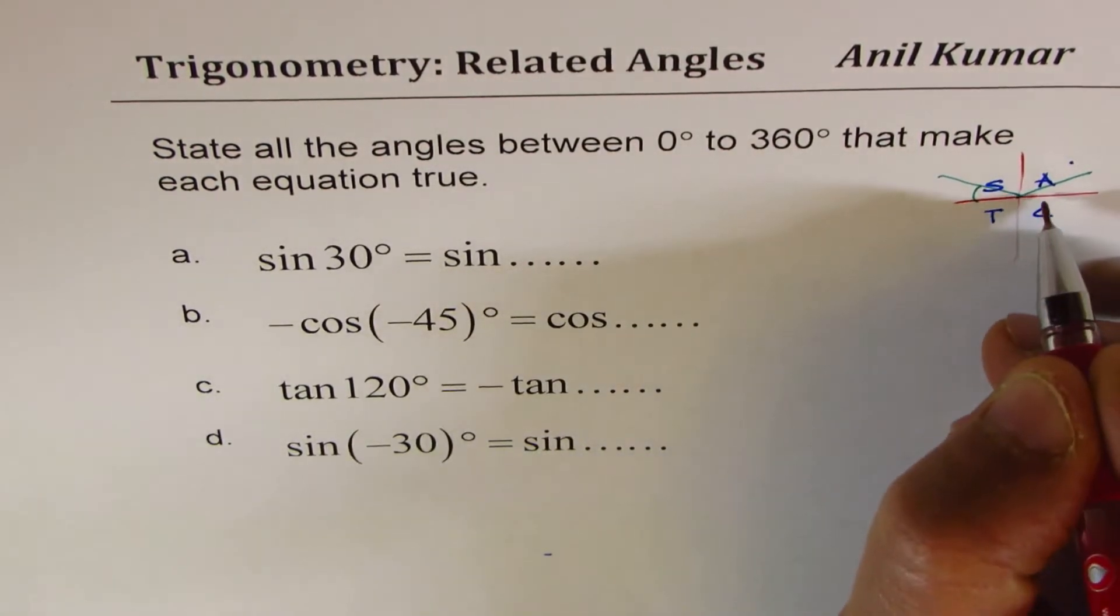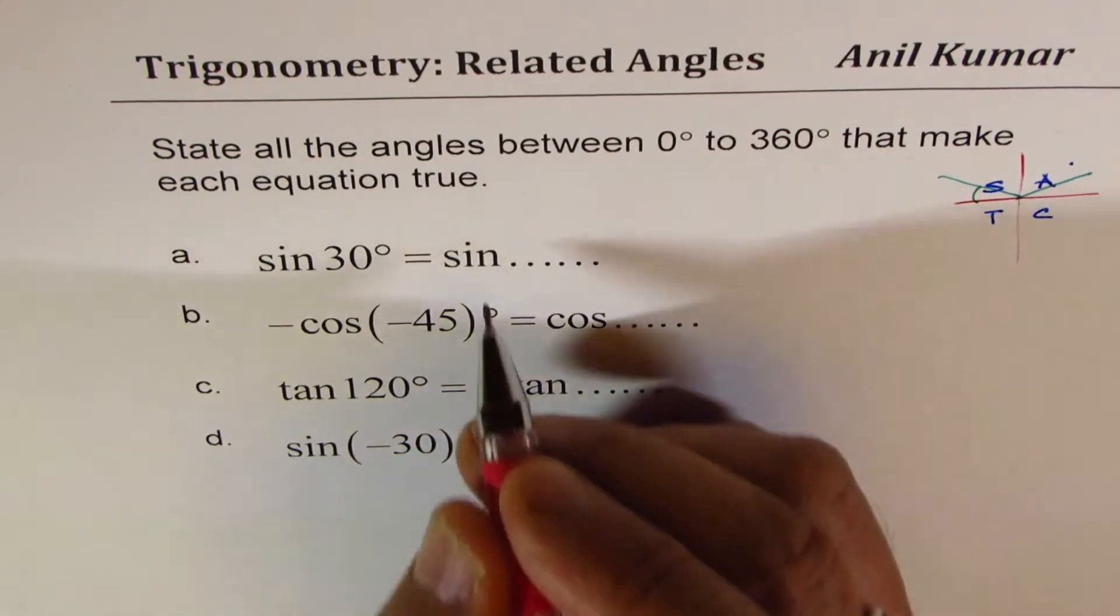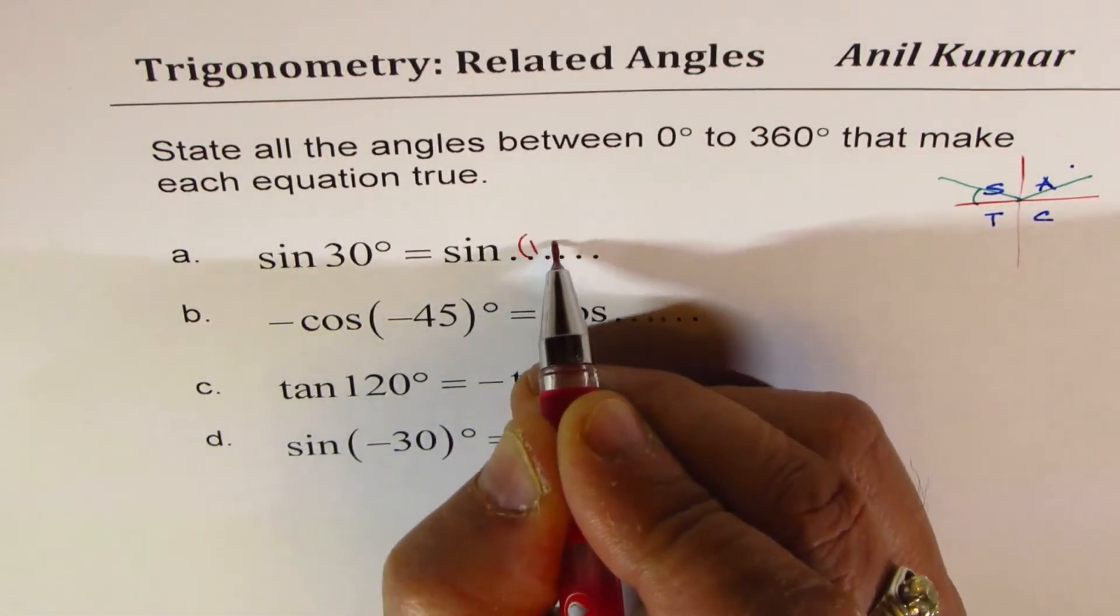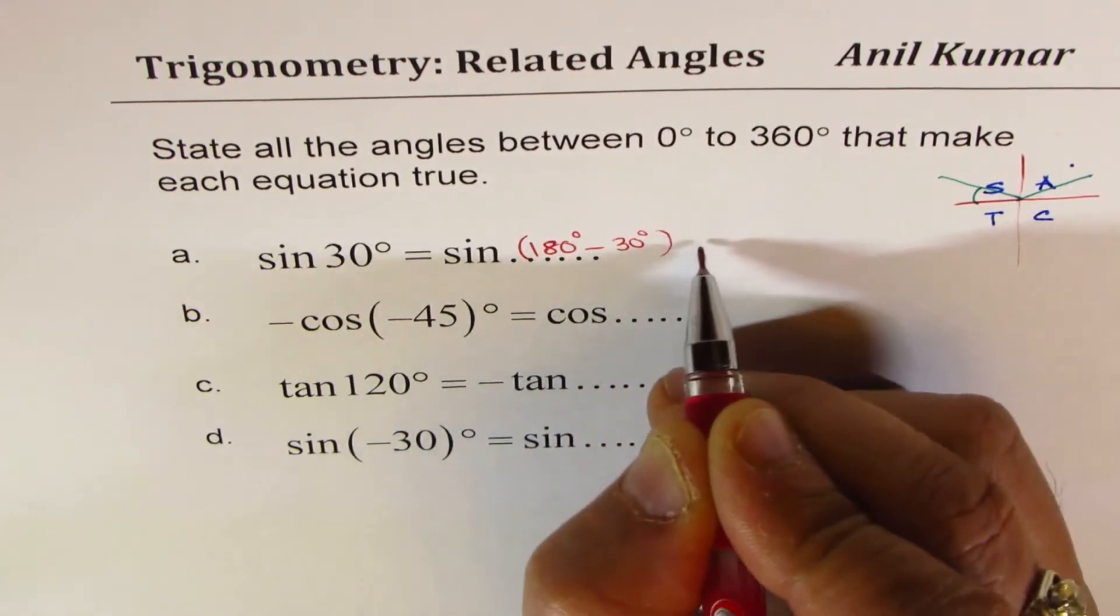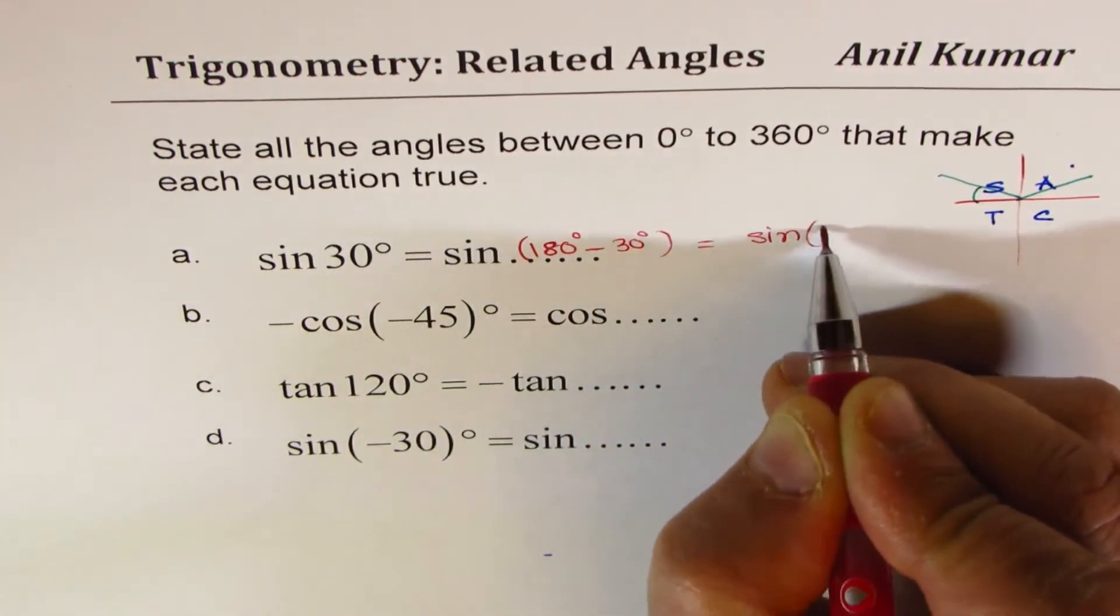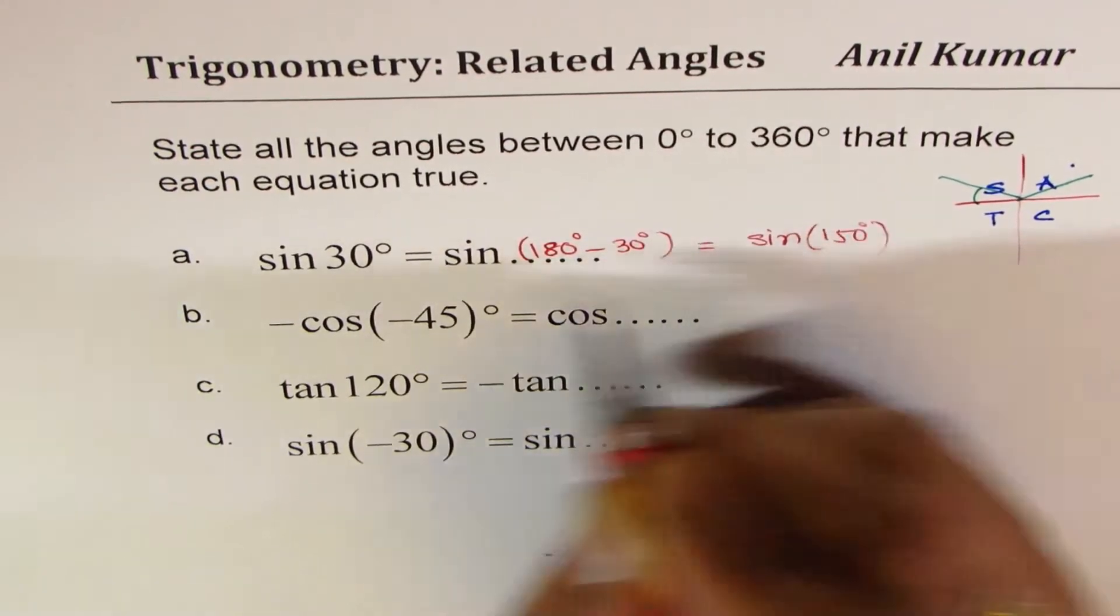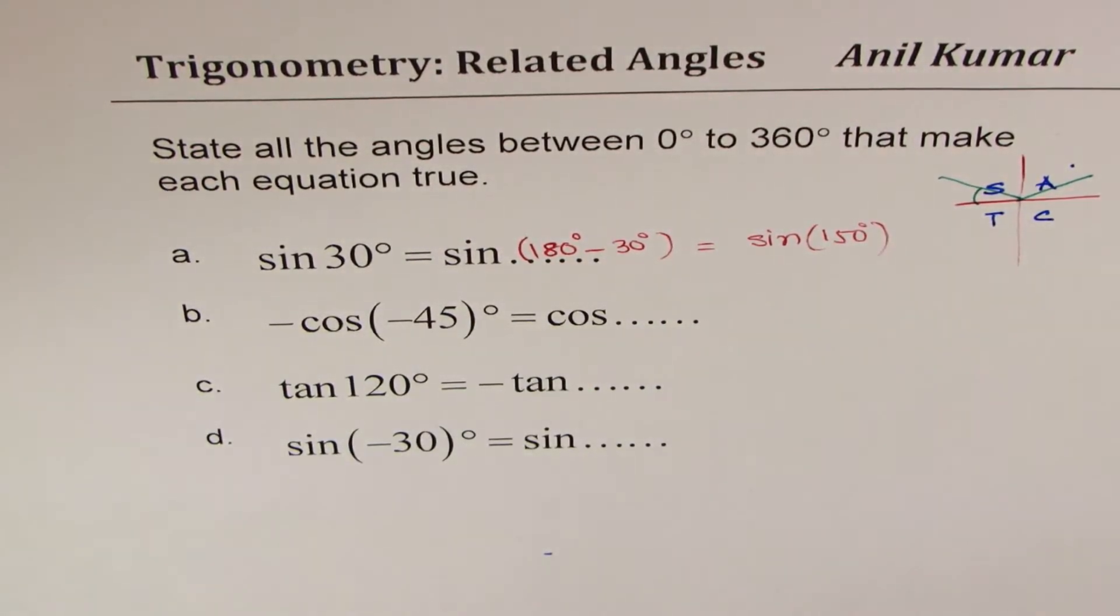So the answer should be 180 minus 30. So this will be sine of 180 degrees minus 30 degrees. That gives you sine of 150 degrees. So that is how you are going to solve these questions.